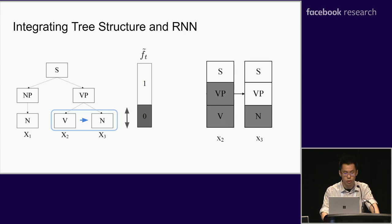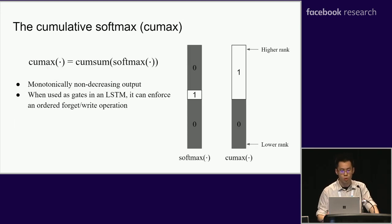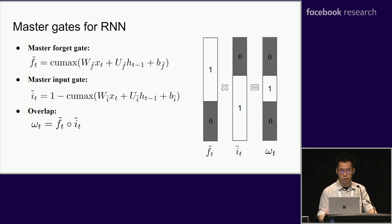The idea is simple — how can we implement this? To model the new forget gate, we propose a new activation function called Cumax, which is a combination of softmax and cumulative sum. The softmax provides a distribution for the position we want to erase up to, and the cumulative sum computes the actual gate value, which is continuous and monotonically non-decreasing. We also found it useful to have a similar but reversed input gate to control the writing operation on the hidden states. We named these gates the master forget gate and master input gate; in practice, those gates can have overlaps where we want to both write and remember.